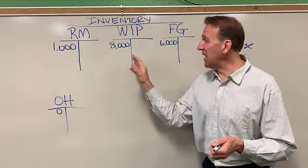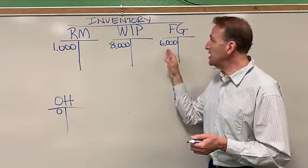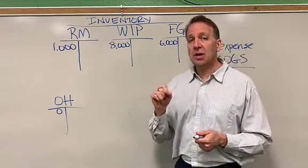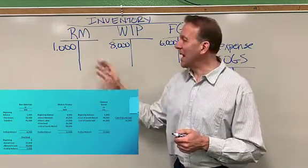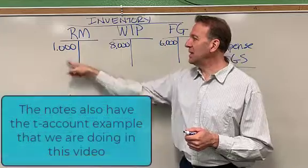Then once it's finished, those costs will move into finished goods. Now, the example that we have in the notes shows like a column approach. I'm going to do this video though in a t-account approach.